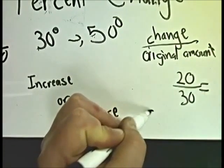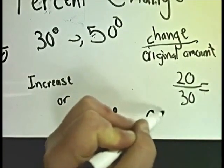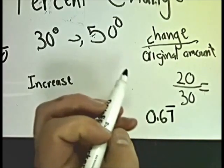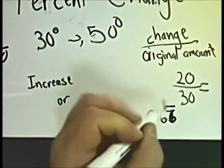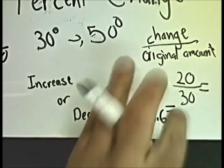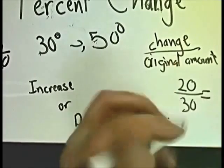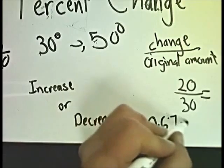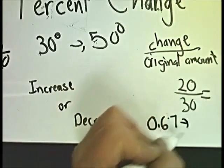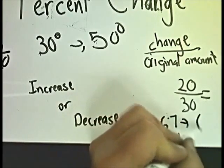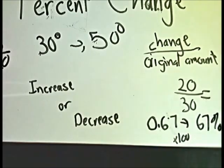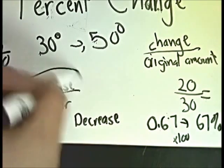If you work it out, it comes out to be 0.67 repeating — the 6 repeats, so it goes on forever. But let's say 0.67, and I'm going to turn that into a percent by multiplying by 100, and that gives me 67%. It's pretty simple to do this. There are two types by the way — there's an increase, or you might be asked what's the percentage of decrease.